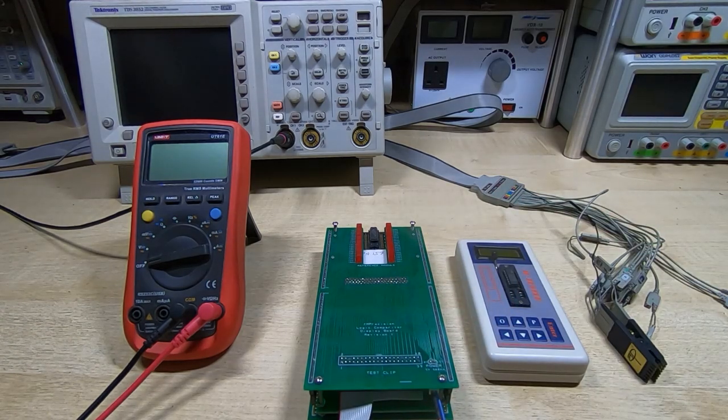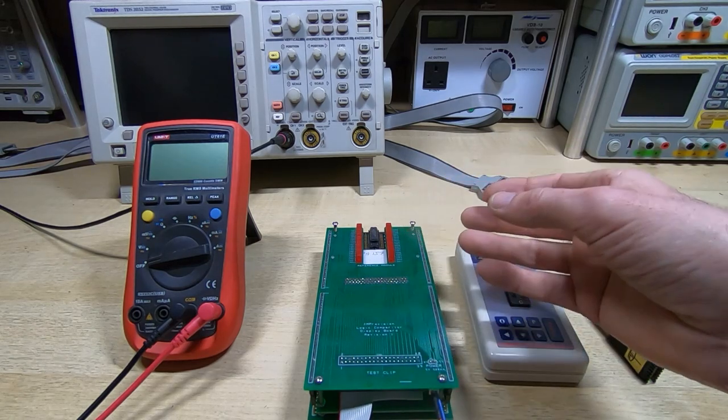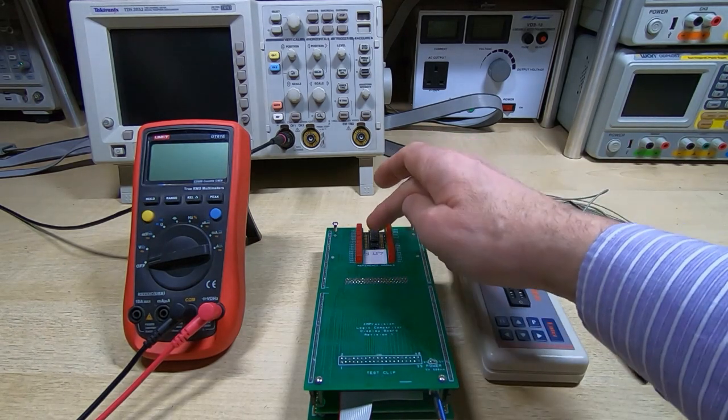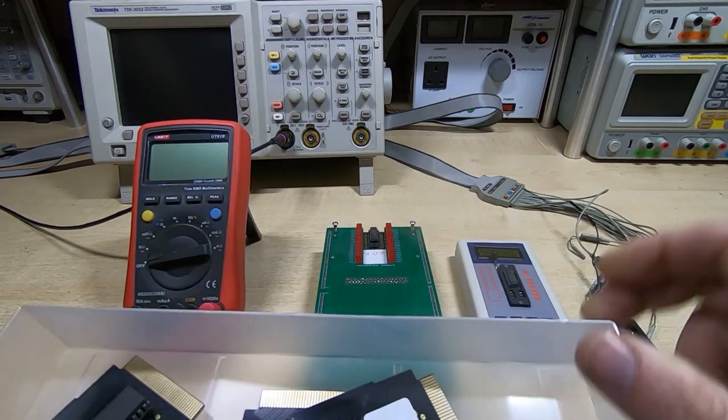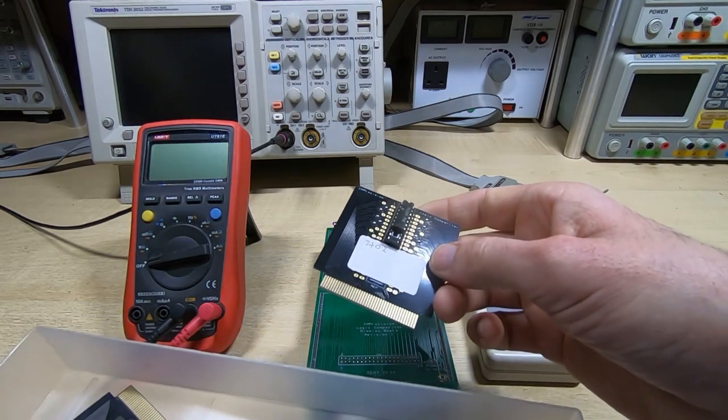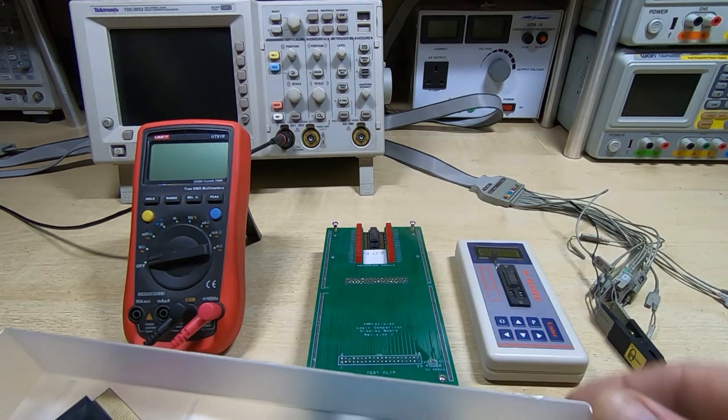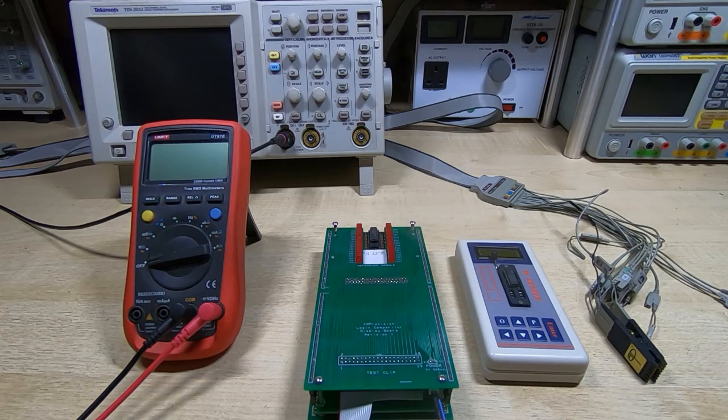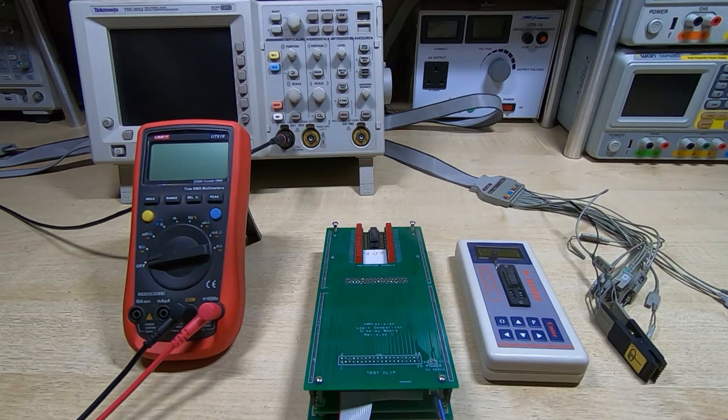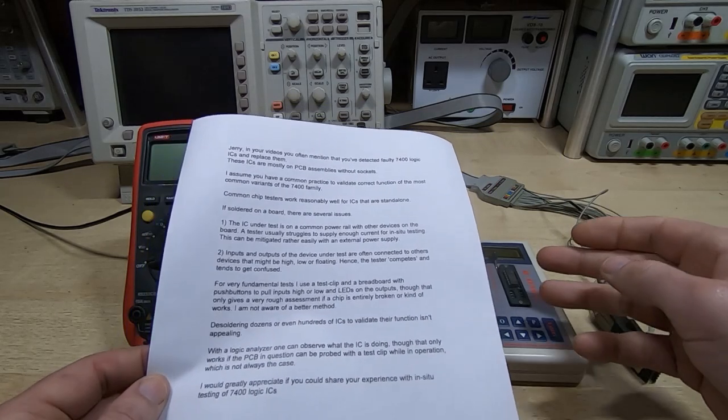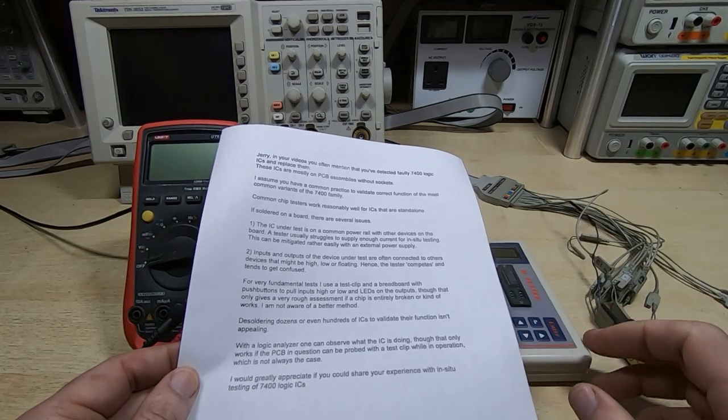Also, quite often you'll find there are various outputs, maybe have open collector outputs tied together and they can interact. So you can't really use this sort of device. Now that's where something like the Logic Comparator comes in. And this is designed specifically to test devices while they're in circuit. But it's really comparing a device on the target board with a device that you fit into the comparator. So there's a whole range of modules. These just plug in and there's one for each different type of IC.